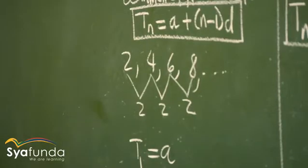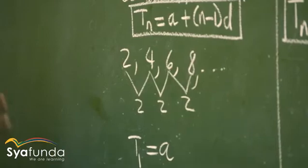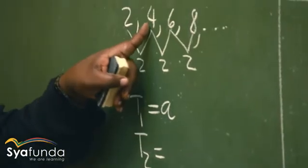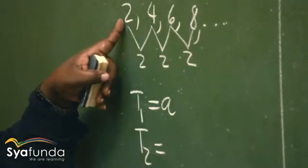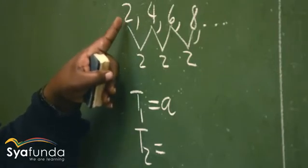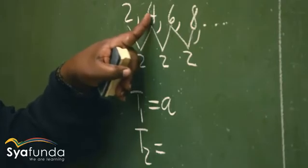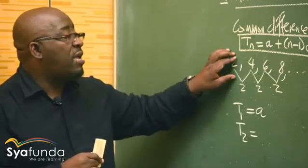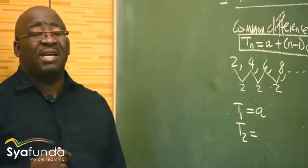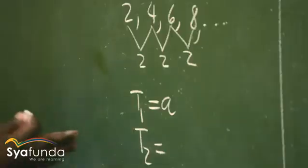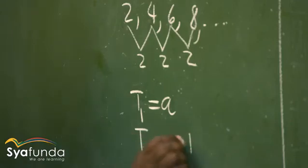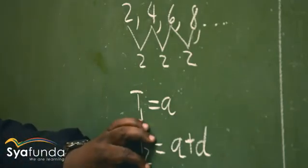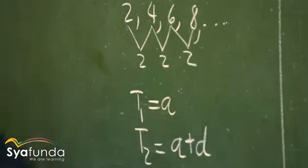If the first term is generally called A, what would be the second term? To move from the first term to the second term, we add the common difference. In this case it is 2, so it is 2 plus 2, which gives us 4. So to find the second term, you take the first term and add the common difference. T2 equals A plus D.